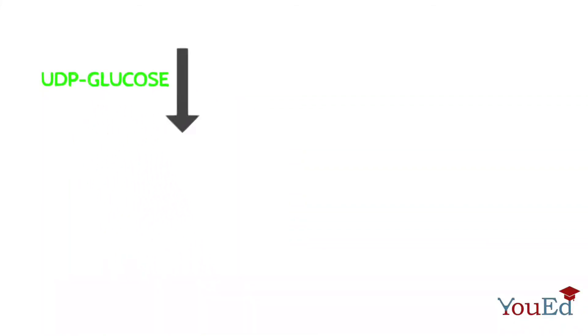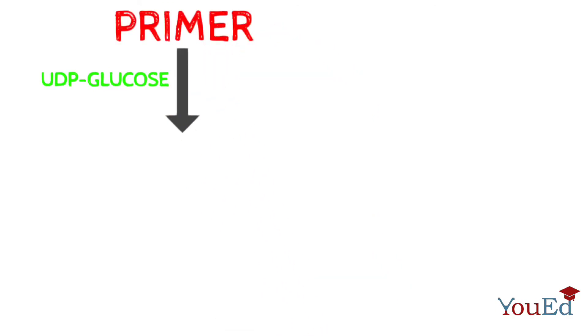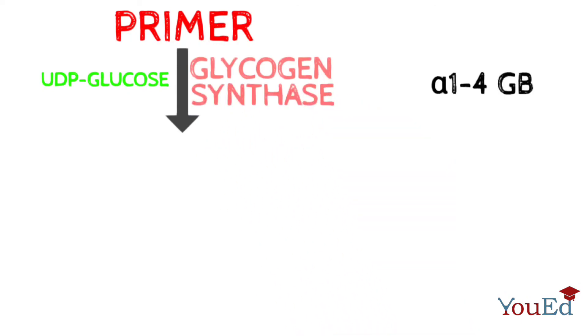Now the glucose molecule in each UDP-glucose are transferred to the primer in every step of the process by the help of the enzyme glycogen synthase. Thus the enzyme is responsible for the 1,4 glycosidic bond between the glycogen chain.